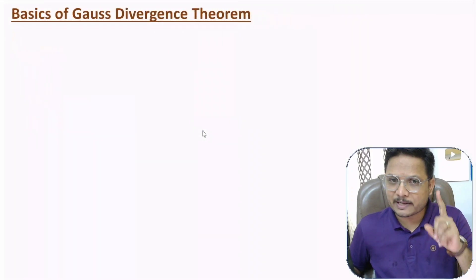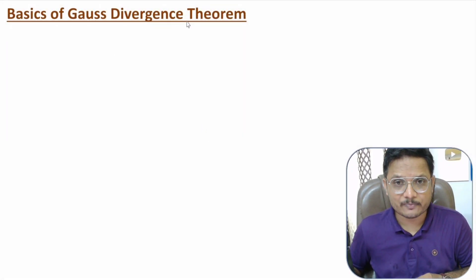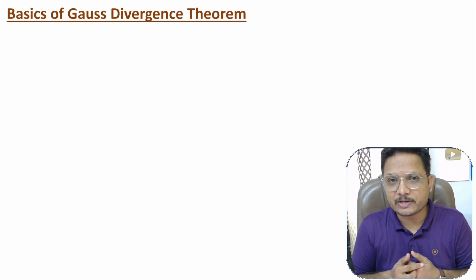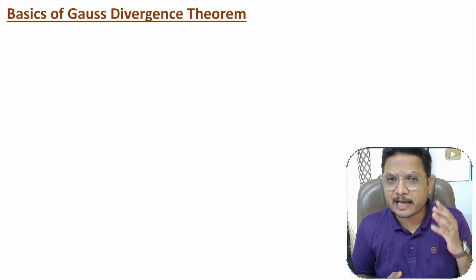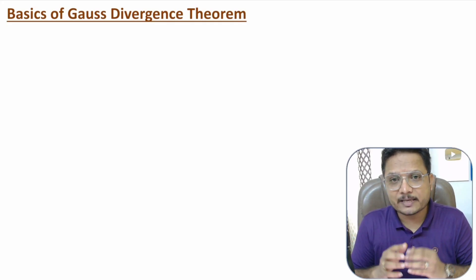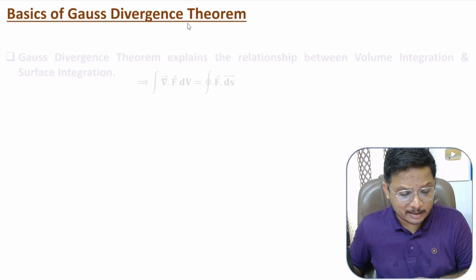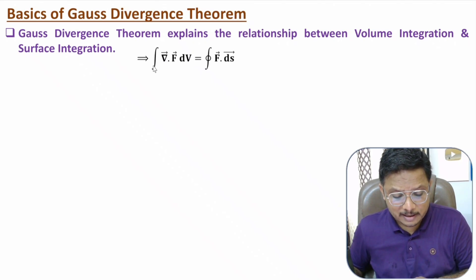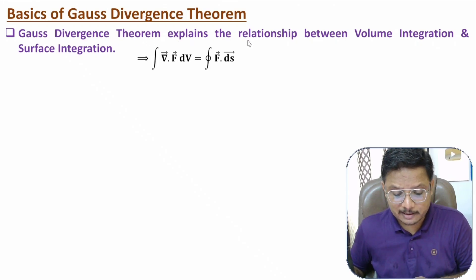So let us begin this session with the first agenda, that is basics of Gauss Divergence Theorem. One should know Gauss Divergence Theorem is based on divergence of function. If you want to calculate divergence of function f, then that is del dot f. Gauss Divergence Theorem explains the relationship between volume integration and surface integration. Divergence of function f with volume integration equals surface integration of function.